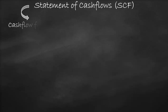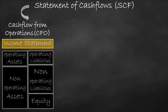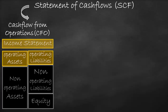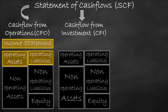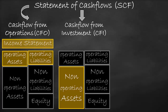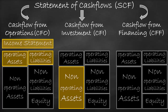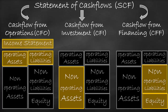Cash flow from operations refers mainly to operations that are reflected in the income statement and operating assets such as accounts receivables, and operating liabilities such as accounts payables. Cash flow from investment refers mainly to the investment side, which is reflected in changes in non-operating assets in the balance sheet. Cash flow from financing refers mainly to the financing side, which is reflected in changes in non-operating liabilities and equity in the balance sheet.